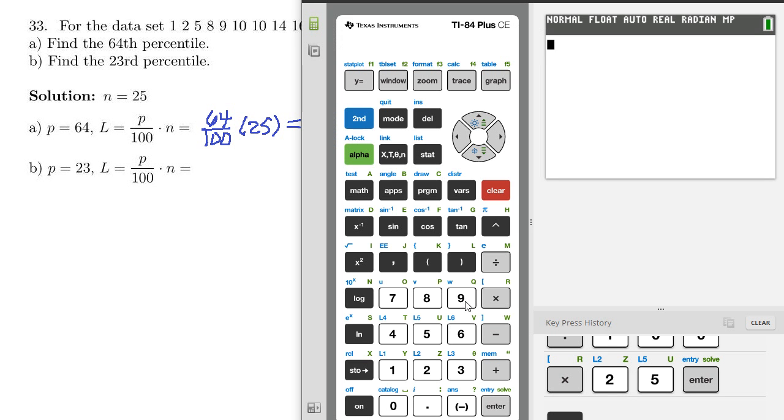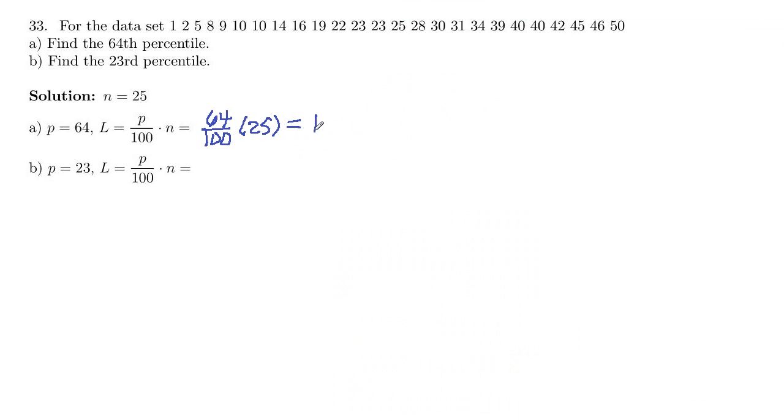So let's compute this. We want 64 divided by 100, and then times 25, so 16. So this is 16, and if that ends up being a whole number, you average the 16th and the 17th position. So you do 16th plus 17th, divide by 2.